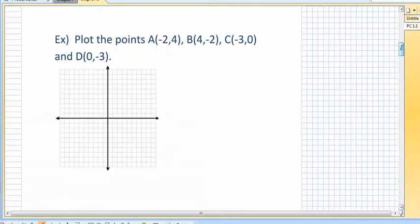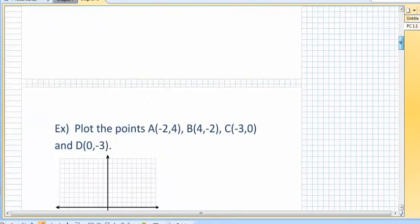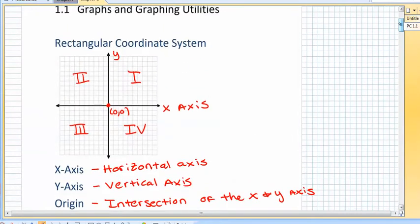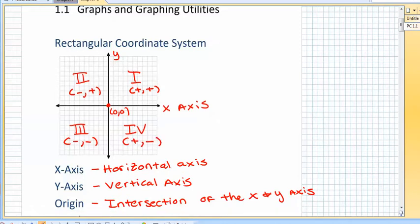Now if you want to plot some points here, first thing you got to remember is that in the first quadrant x and y are both positive. In the second quadrant x is negative and y is positive. In the third quadrant they're both negative and the fourth quadrant x is positive and y is negative.